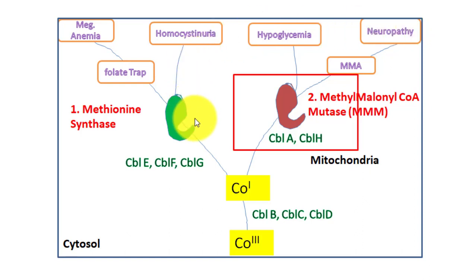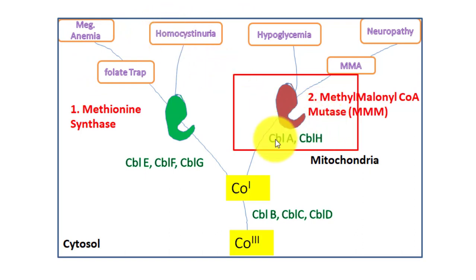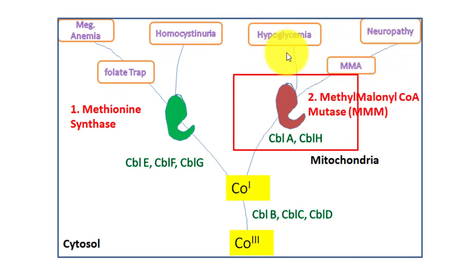This is very important to understand. If the upstream proteins B, C, D are deficient, all presentations occur. If there is deficiency only in the cytosolic branch proteins (E, F, G), the presentation will be only folate trap and megaloblastic anemia — folate level will be high, vitamin B12 in the blood will not be deficient, but homocysteine will be elevated. If there is isolated deficiency of A and H or the methylmalonyl coenzyme A mutase enzyme itself, there will be no homocystinuria or megaloblastic anemia — only methylmalonic acid will be very high and hypoglycemia will be present. This is how we can diagnose disorders related to intracellular metabolism of vitamin B12 and analyze our test results based on this brain map. If you see value in the video, please like and subscribe. Thank you.